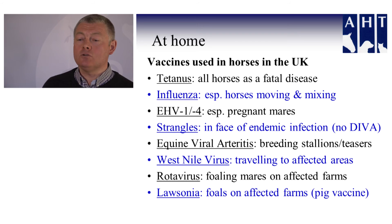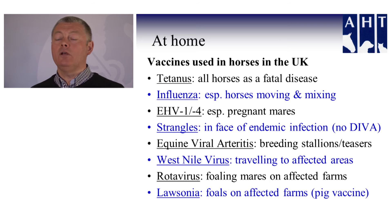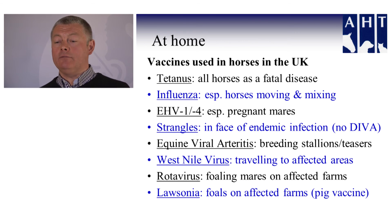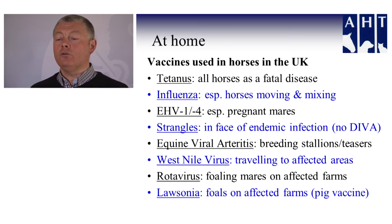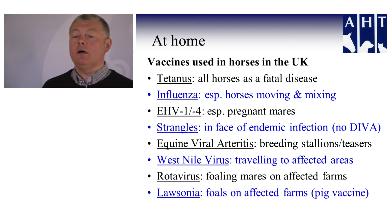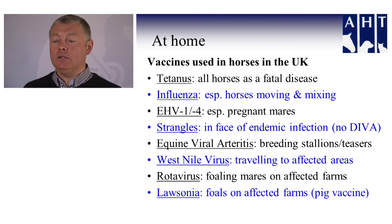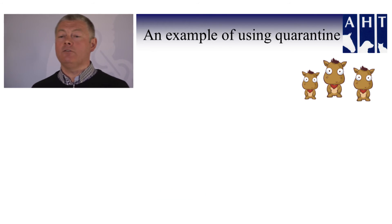Rotavirus vaccine is used for foaling mares, particularly on affected farms, to protect the foals they give birth to. And finally, Lawsonia — for use in foals on affected farms several months old. It should be noted this is a pig vaccine that would need special permission to be used in horses, but it is being used and is being shown to be effective on affected farms.